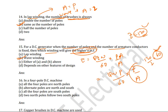For lap winding, the number of parallel paths equals the number of poles — for example, 4 or 8. So Z/A gives a smaller result, and the total induced EMF is reduced. For wave winding only, we get the highest induced EMF. Just remember Z/A — the correct answer is wave winding.